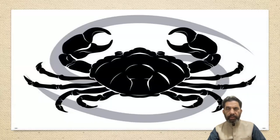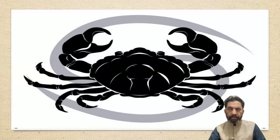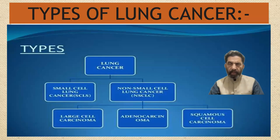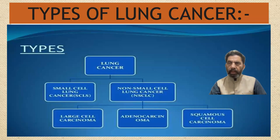This picture of the crab shows how cancer spreads. Clinically we divide lung cancer into two groups: small cell carcinoma and non-small cell carcinoma. Non-small cell carcinoma is further divided into squamous cell carcinoma, adenocarcinoma, and large cell carcinoma. This is the clinical classification.